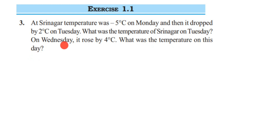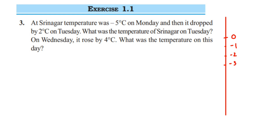They are asking two questions: the temperature on Tuesday and on Wednesday, and the change in temperature. To understand this, let me draw a number line — kind of like a thermometer. Negative integers come on the left side of zero and positive integers on the right side. Since I have drawn the line vertically, integers below zero are negative and above zero are positive.